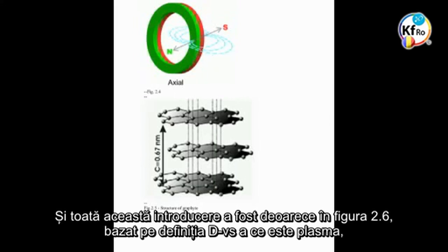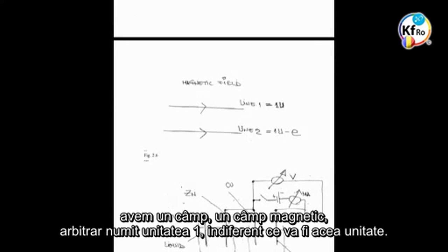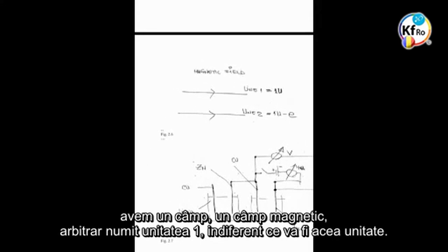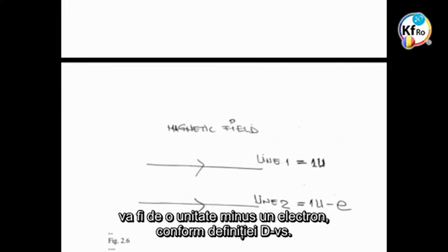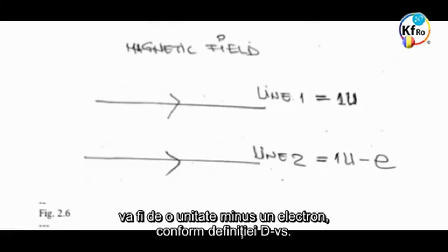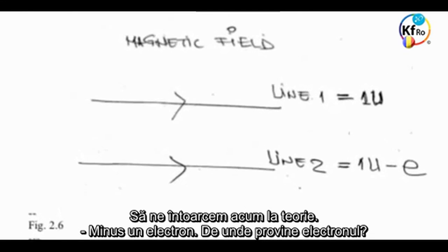In Figure 2.6, they are showing based on your definition what plasma is. We have a magnetic field of an arbitrary one unit, and the second field traveling in the same direction will be one unit minus an electron. This is coming back to the theory, minus one electron.